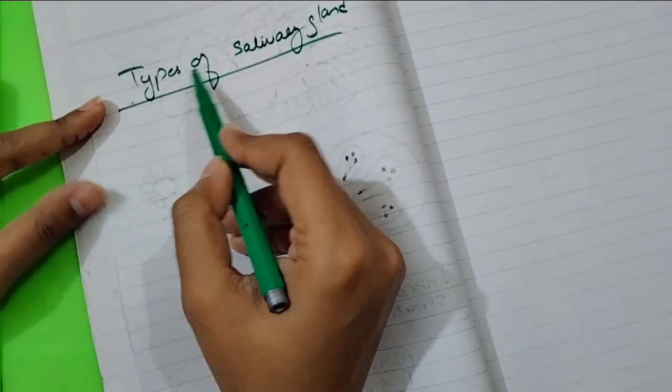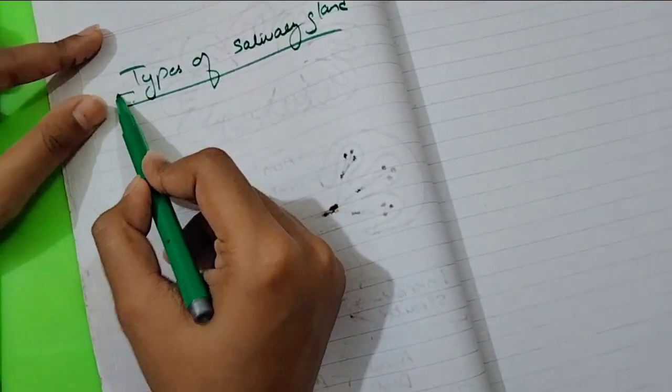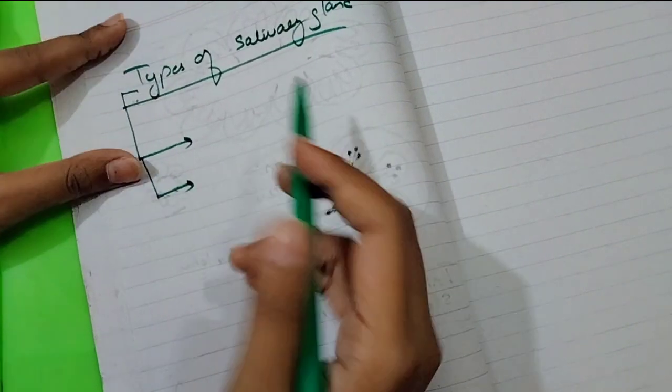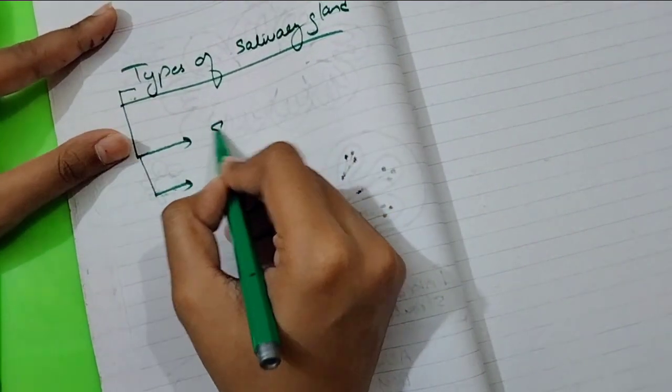The first topic is the types of salivary gland. We divide the salivary gland on two bases. We classify it on the size of the base.